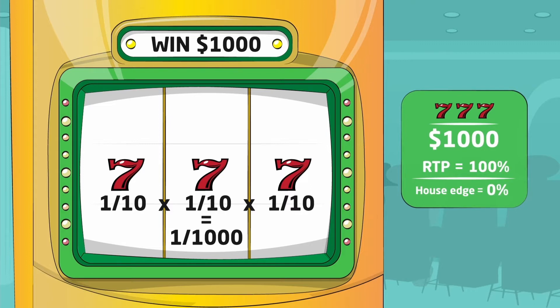If the payout for three sevens was just $950, this game would have much more realistic characteristics, a 95% RTP and a 5% house edge.